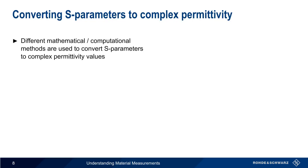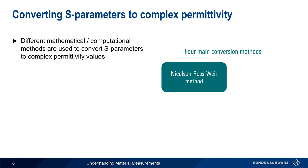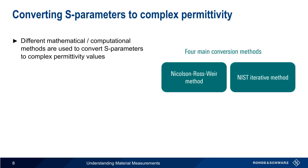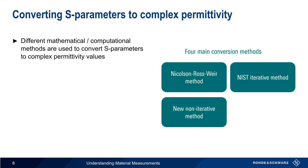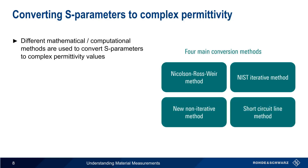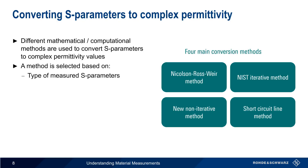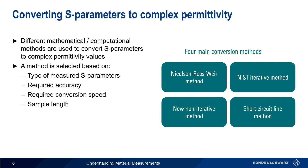There are different mathematical or computational methods that can be used to convert measured S-parameters into complex permittivity values. The four most common conversion methods are the Nicholson-Ross-Weir method, the NIST iterative method, the new non-iterative method, and the short circuit line method. A conversion method is chosen based on criteria such as the type of measured S-parameter — for example, one port versus two port — the required accuracy, the required conversion speed, the sample length, etc.